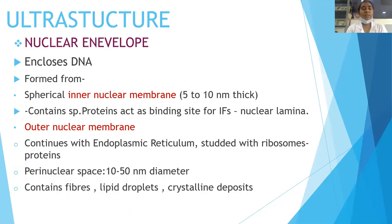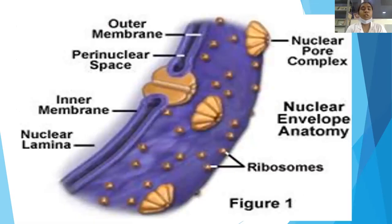Nuclear envelope ultrastructure: it encloses DNA and is formed from a spherical inner nuclear membrane 5 to 10 nanometers thick. It contains proteins and acts as a binding site for intermediate filaments and the nuclear lamina. The outer nuclear membrane is continuous with the endoplasmic reticulum, studded with ribosomes. The perinuclear space is 10 to 50 nm in diameter and contains fibers, lipid droplets, and crystalline deposits. In this picture, the outer and inner membranes, the perinuclear space, nuclear pore complex, and nuclear lamina can be seen.